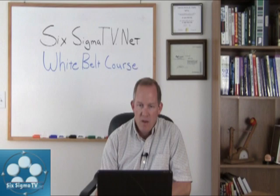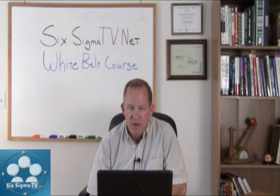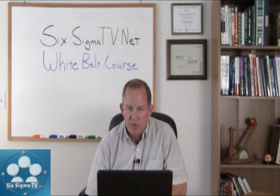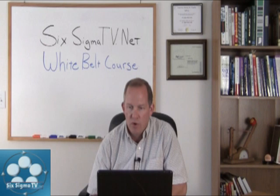Here's an example of a CTC tree. We determine what's critical to our customer on the left — that came from our voice of the customer in the define phase — and we break that down into different components. In this case, we need to print at least 100 pages in less than two minutes. Elements include the length of the print documents, the printer speed, and the number of users. The measurements to help us predict that customer requirement can be drilled down further into sub-components such as file size, number of pages, order capacity, etc. We want to get as much granularity and stratification of these measurements as we possibly can.